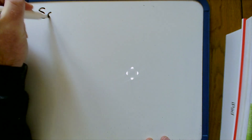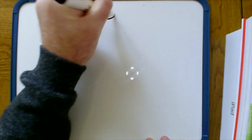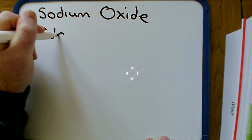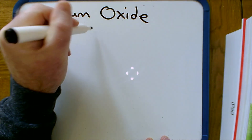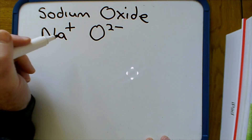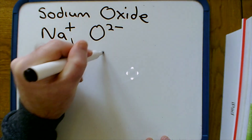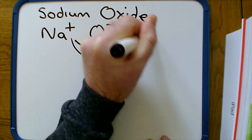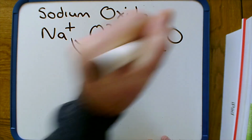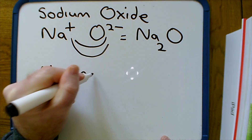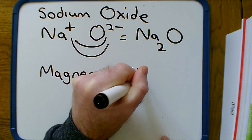Now let's look at some harder examples where the positive and negative ions don't have the same unit of charge. For sodium oxide: the sodium ion is Na+ and the oxide ion is O2−. We need two Na+ to cancel out the 2−, so the formula is Na2O. Alternatively, just swap the numbers over — swap the 2 and the 1 — and it becomes Na2O.